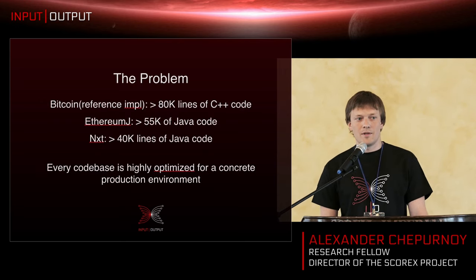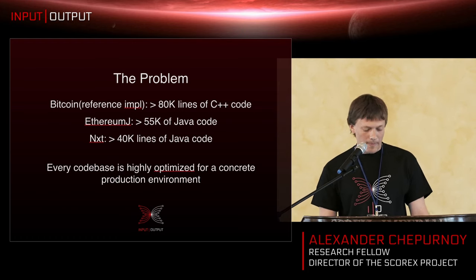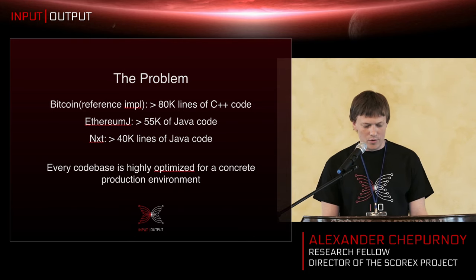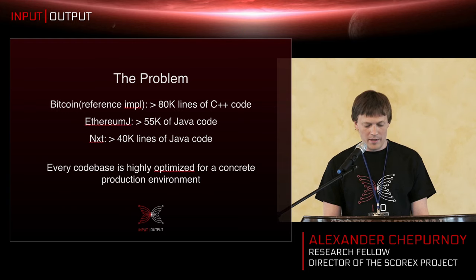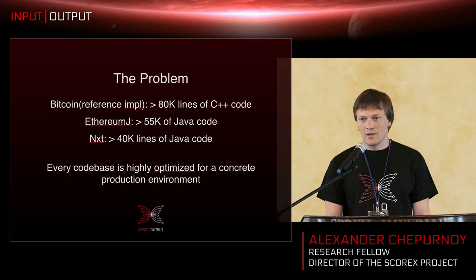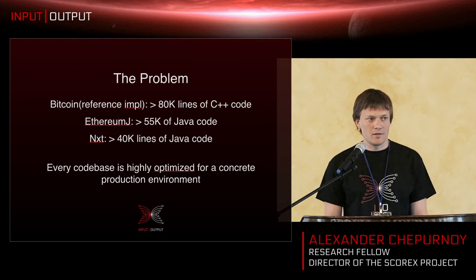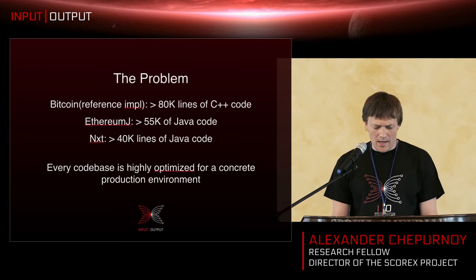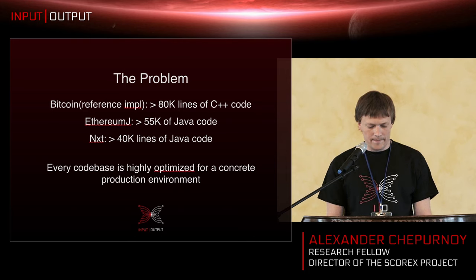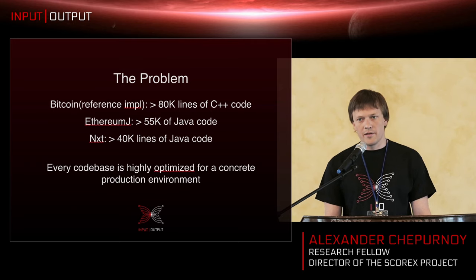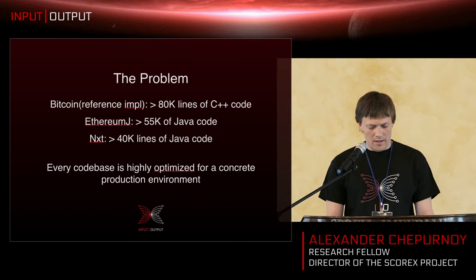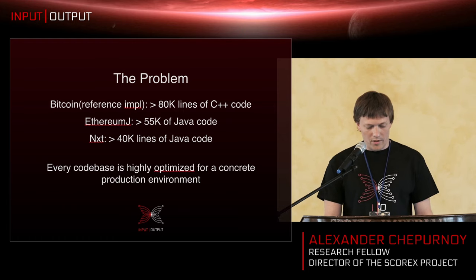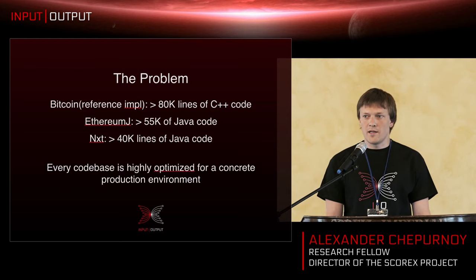So what's the problem? Now we have a use case in mind — what's the problem with implementation? If you're going to work around the Bitcoin reference implementation, that's more than 80,000 lines of C++ code, and probably more than 200,000 lines of code across all languages including Python testing scripts. In the same way, EthereumJ is more than 55,000 lines of Java code, and the Go implementation is probably about the same order of complexity. NXT is more than 40,000 lines of Java code.